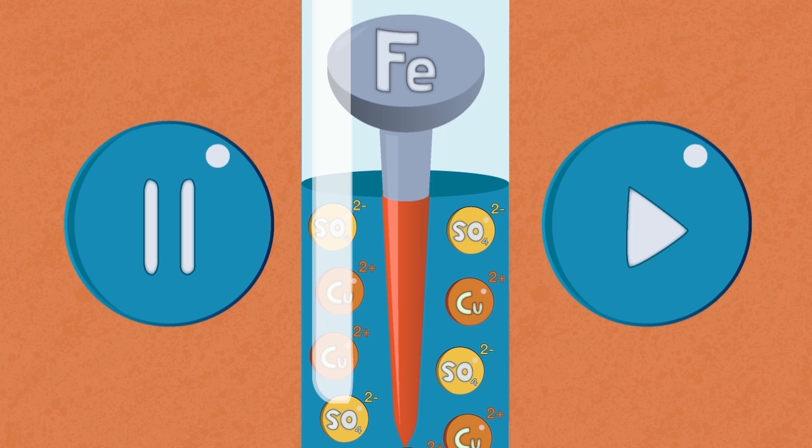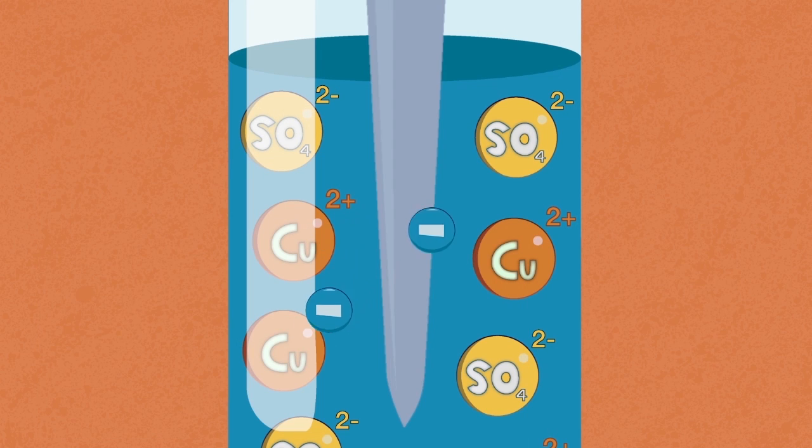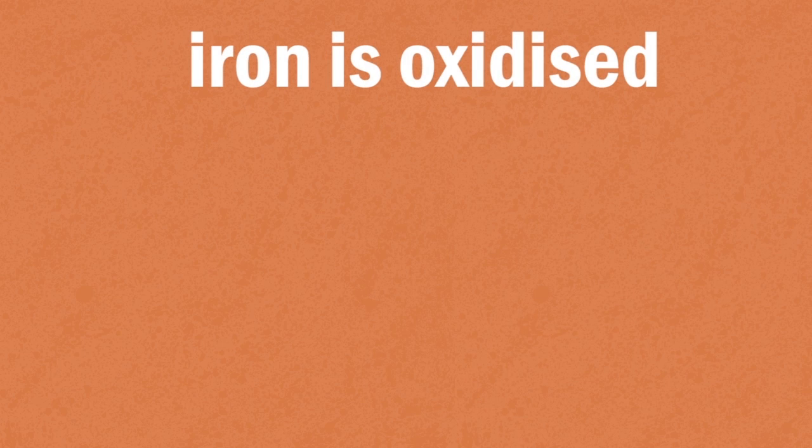The correct answer is that the iron is higher in the electrochemical series, so it gave away its electrons to the less reactive copper 2+ ions in solution. The iron is oxidized as shown in the equation.